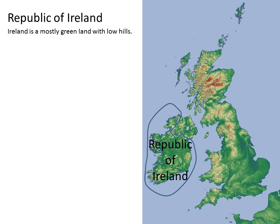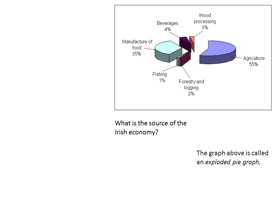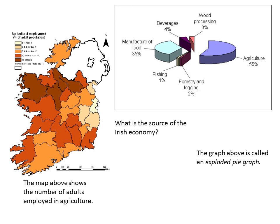The Republic of Ireland is a mostly green land with low hills and cliffs at the edge. Most of the Irish economy is based on agriculture, and the largest next sections are based on manufacture of food, beverages, and fishing — all food-oriented. The map shows the number of adults employed in agriculture, with that being the least in the central eastern part.